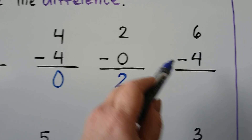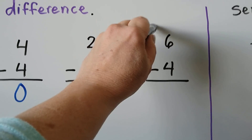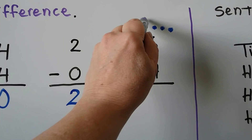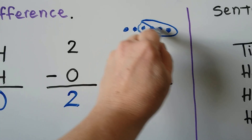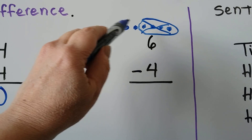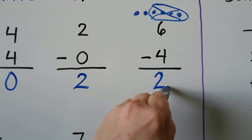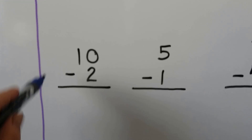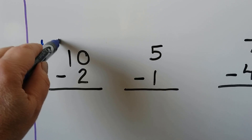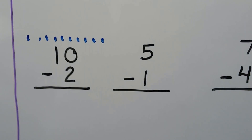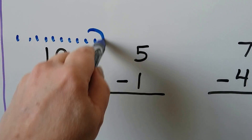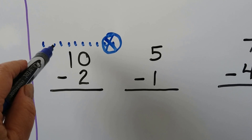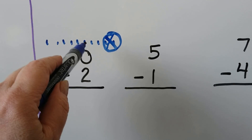Six minus four — we can make six dots and take four away, leaving two. Ten minus two — we can make ten dots and take two away. Count how many are left: eight.